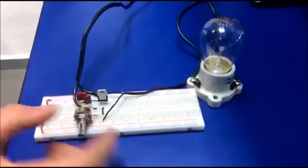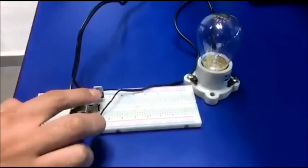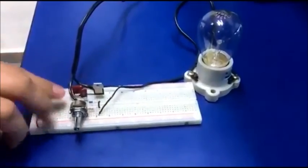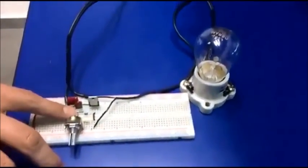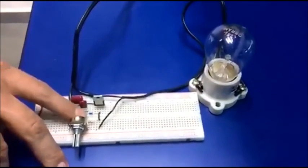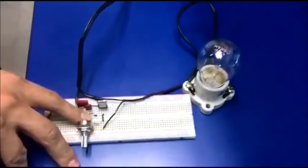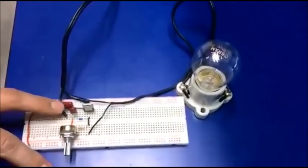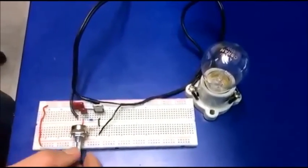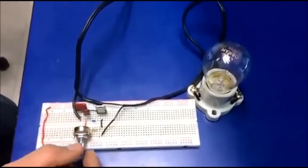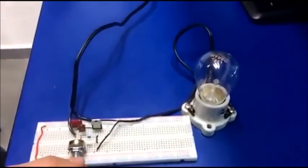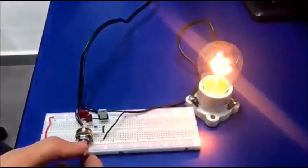So this is the potentiometer that will change the intensity of the light. This is the TRIAC and the DIAC. We use two resistors, one of 8.2K and another one of 10K. These are two capacitors, and if we move the potentiometer, the intensity will change.